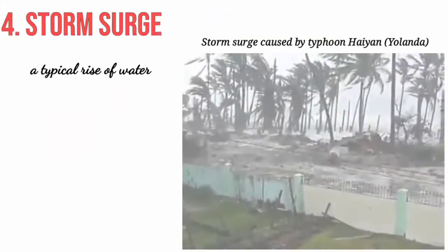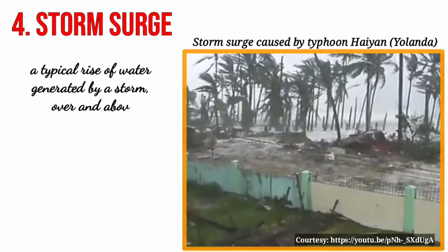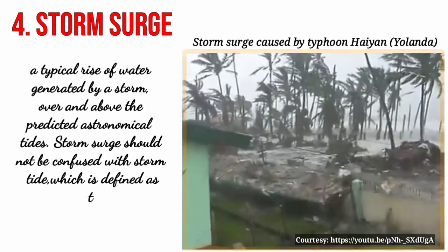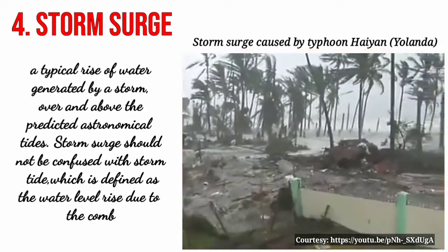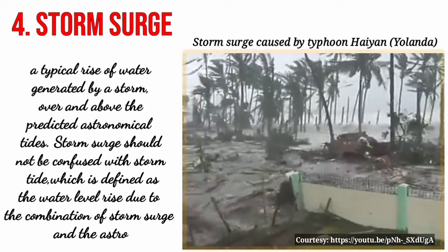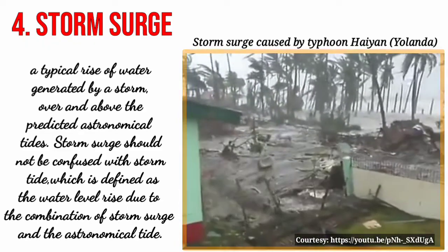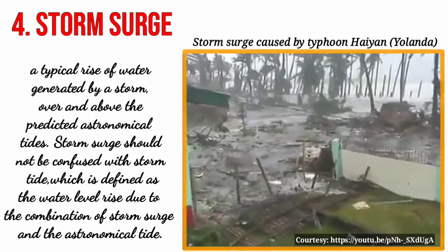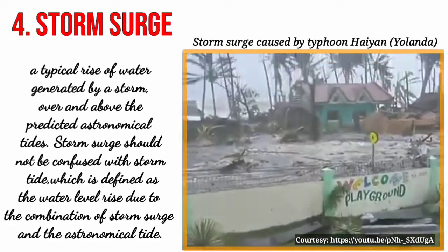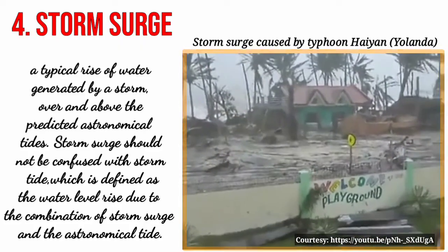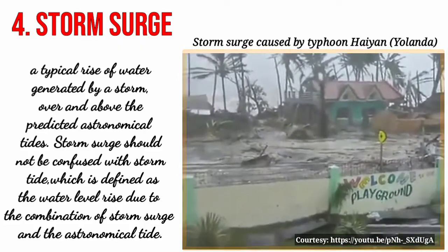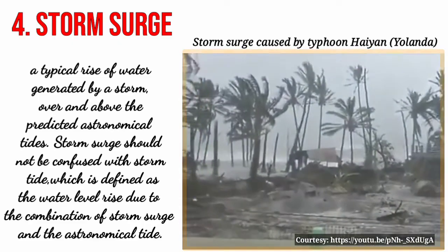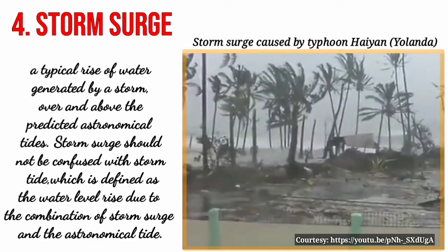Storm surge is an atypical rise of water generated by a storm, over and above the predicted astronomical tides. Storm surge should not be confused with storm tide, which is defined as the water level rise due to the combination of storm surge and the astronomical tide.